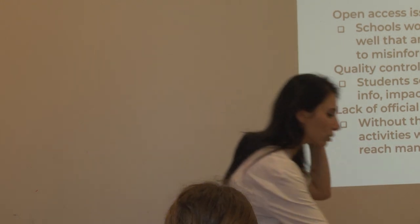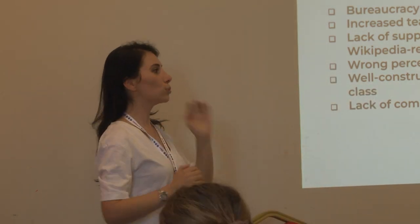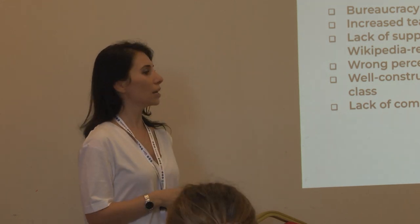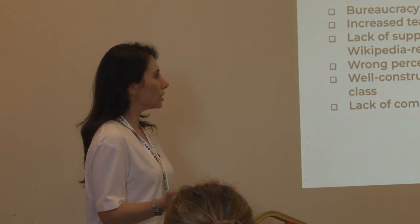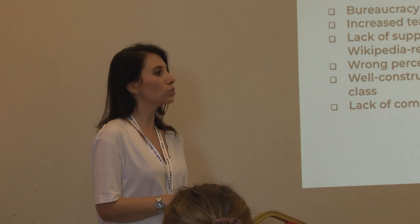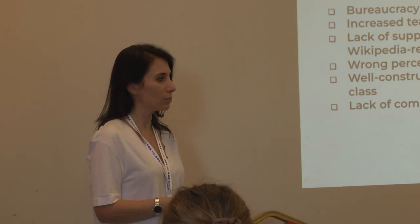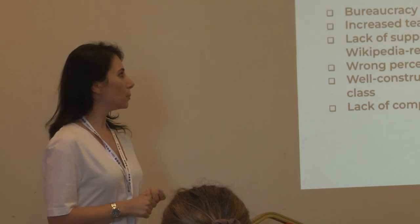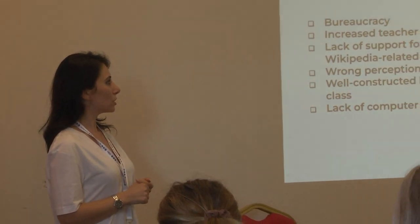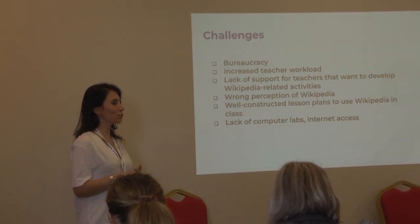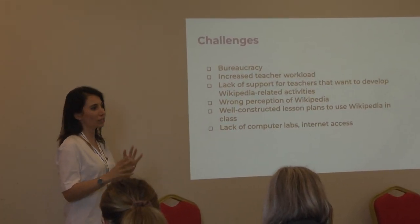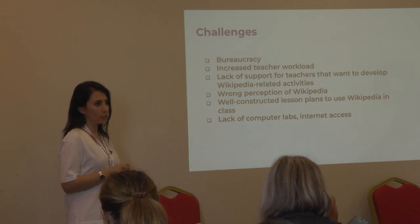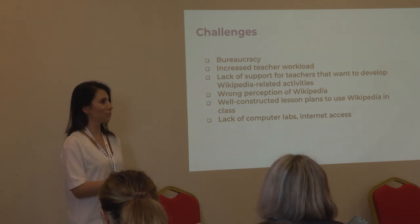This bureaucracy starts from the teachers themselves, then the director, then the school administration, and all the way up to the Ministry of Education — which is fair enough, of course we need permission. The Ministry of Education should see what is actually happening in class and approve that we're teaching correct information. But there is also the ongoing wrong perception of Wikipedia. Apart from the English edition, I think all other languages are struggling to convince teachers and students that Wikipedia is actually reliable. What we're trying to do is make it more reliable together with those who already find it reliable.